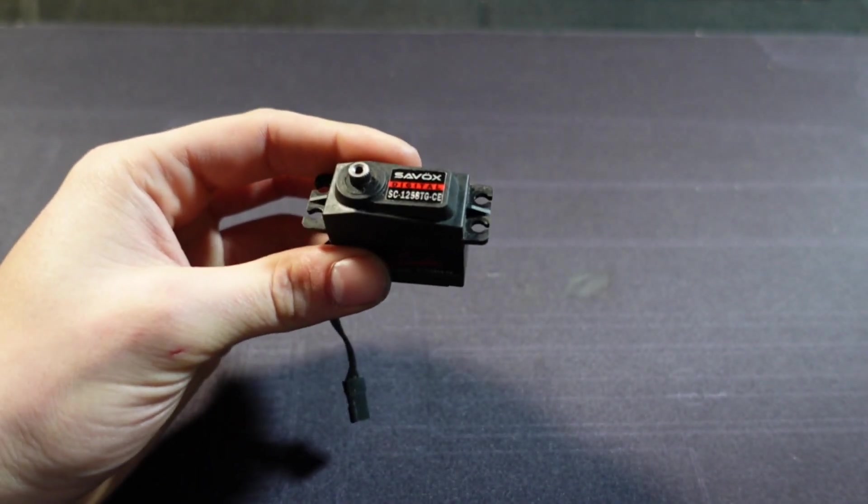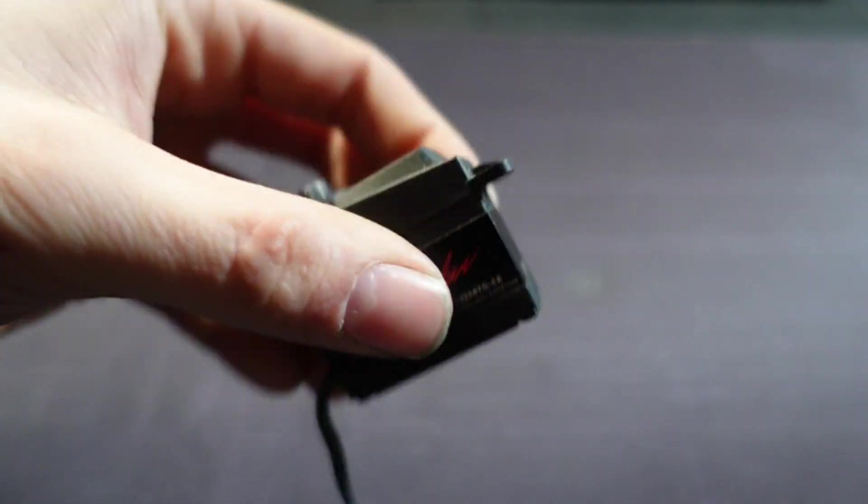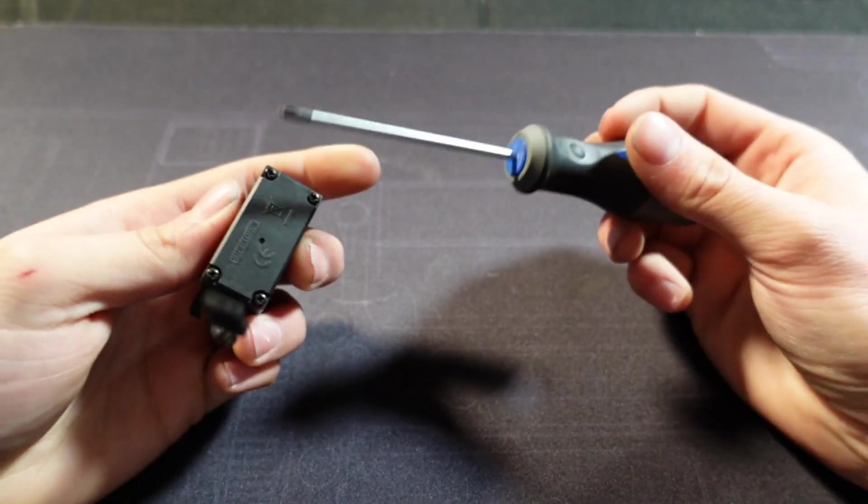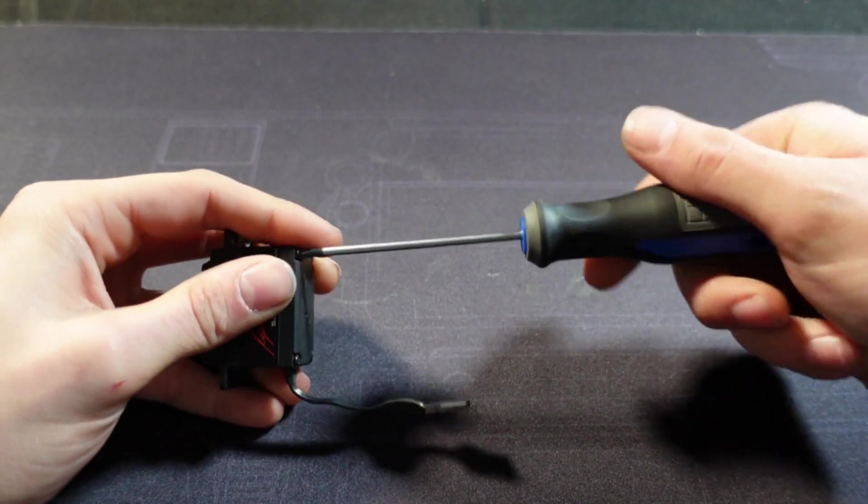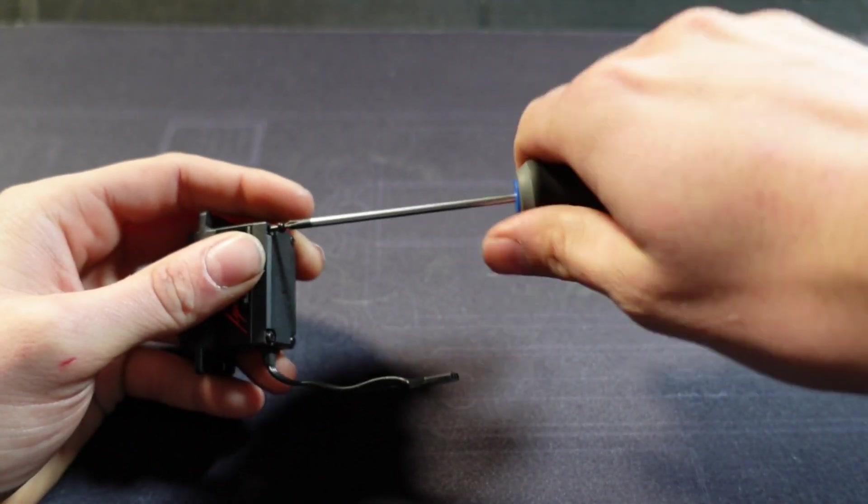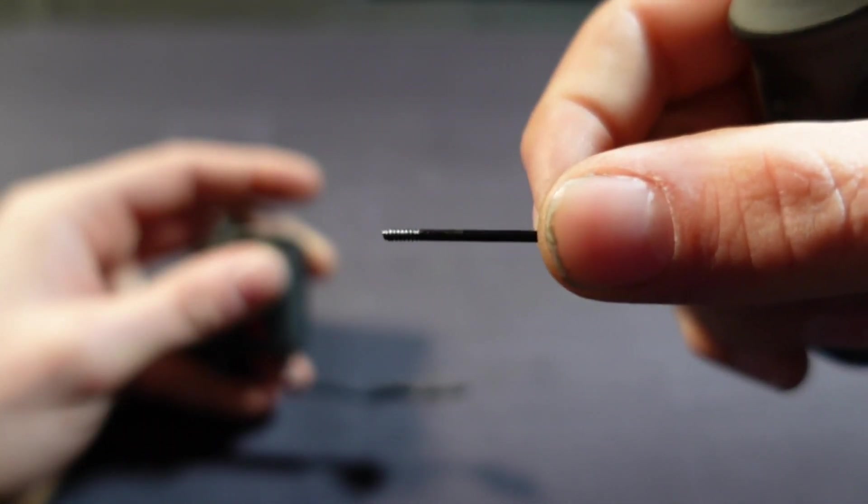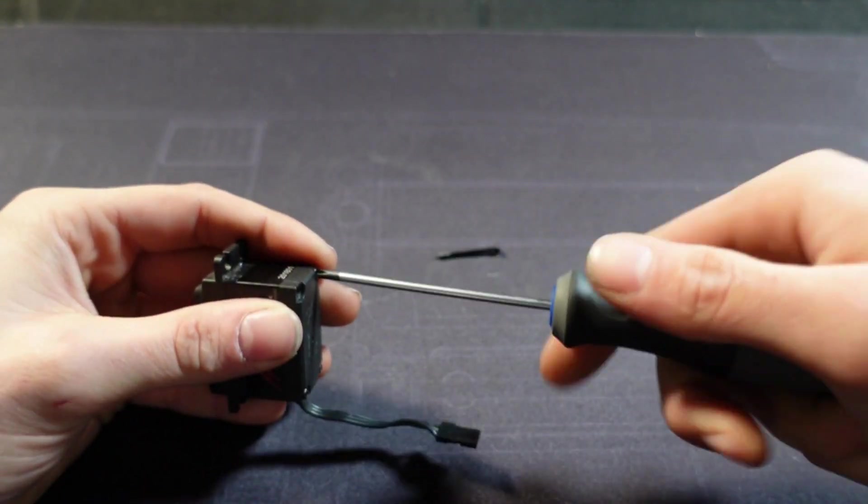All right guys, so we got the RC servo right here. Now this is just a standard Savox 1258 like I had mentioned. So this guy's got four screws on the bottom and she should come apart. I brought my screwdriver, I'm gonna go ahead take them out so you guys can see what's going on inside an RC servo. They got screws that come up through the case, hold it all together clamped together like a sandwich.